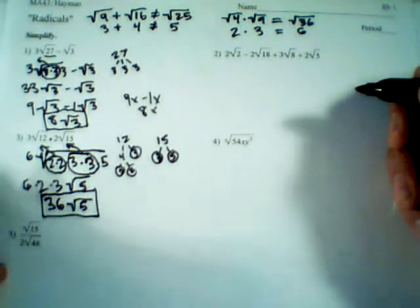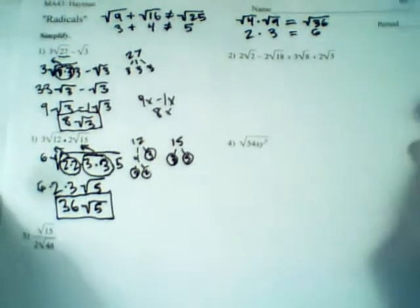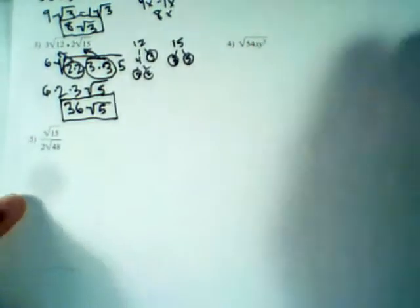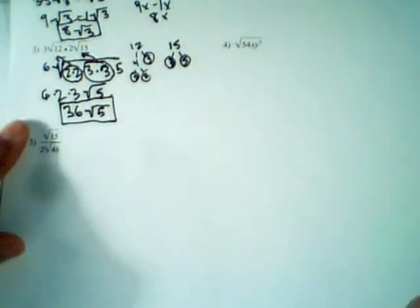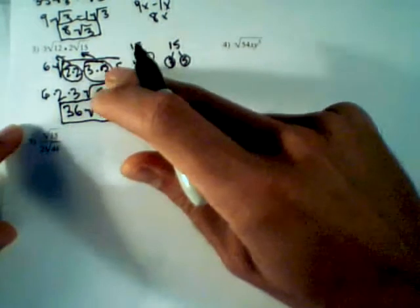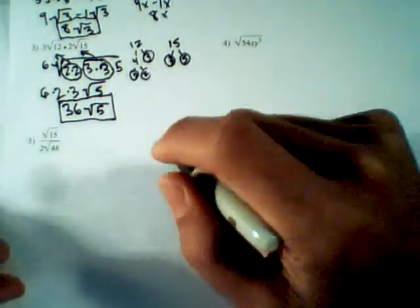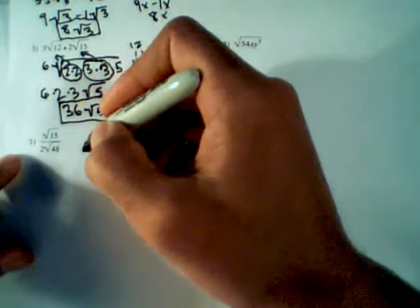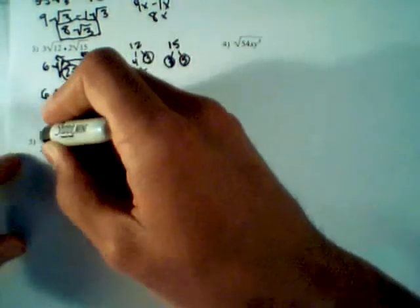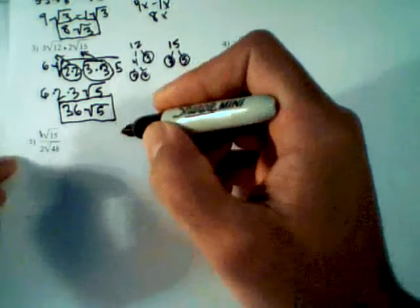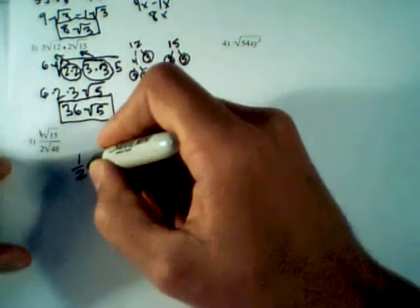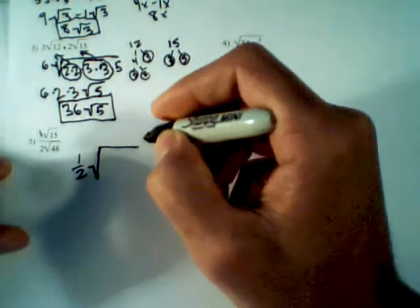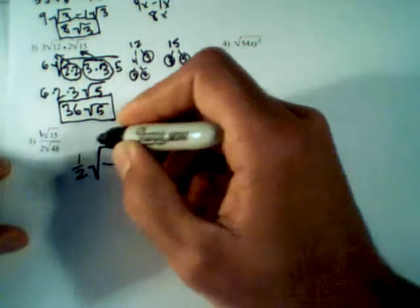Let's move on to number 5 down here: root 5 divided by 2 root 48. The operation is division. Multiplication and division operate similarly as related inverse operations, so we can use the same theory and combine them. First we think about coefficients — we have a 1 on top and a 2 on the bottom, so dividing gives us one half. Then we put all the radicals underneath the same roof and factor them.